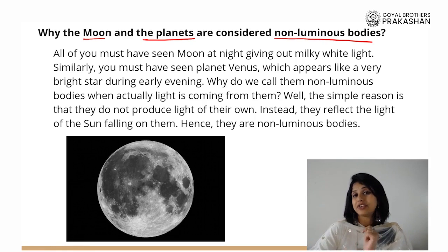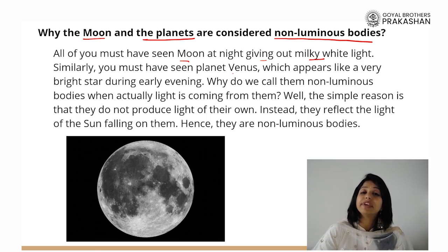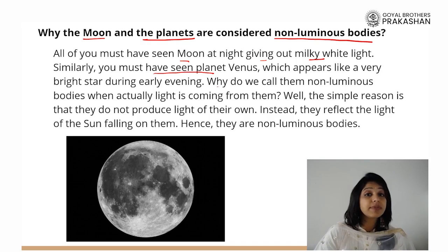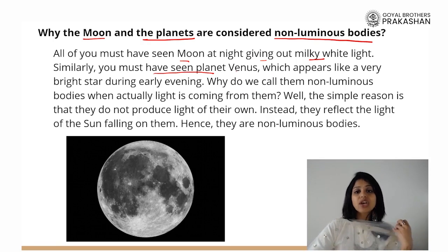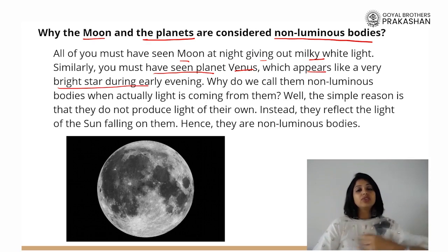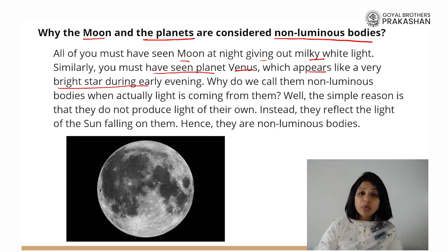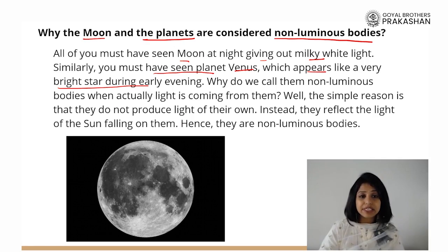Why is it so? We must see moon at night giving out milky white light. But when we talk about moon having its own light, that's false. The same is true for planets — they are also visible in the night sky like shiny small dots, similar to stars but yet different. Venus appears like a very bright star during the early evening. We call them non-luminous because they are not producing their own light. Any body is non-luminous if it is not producing its own light.